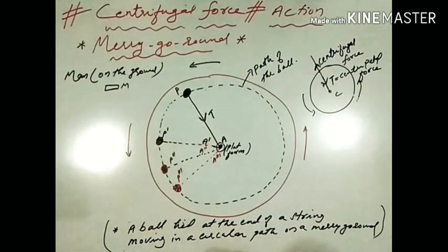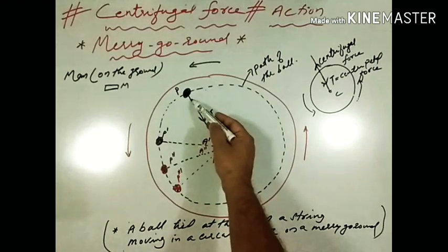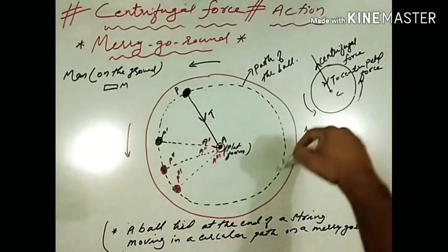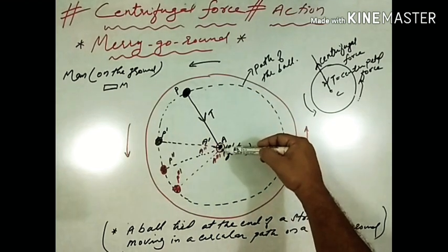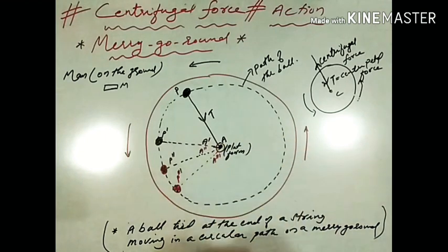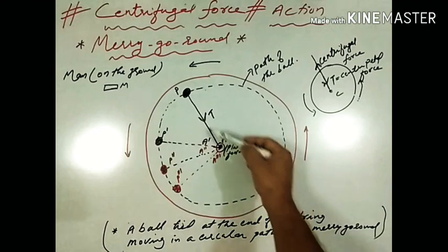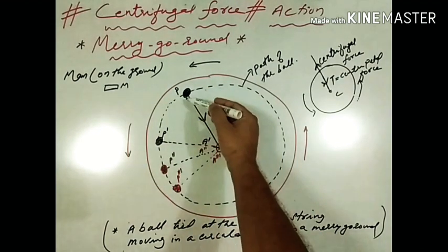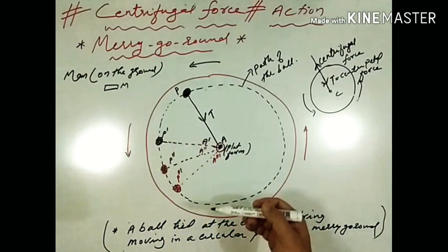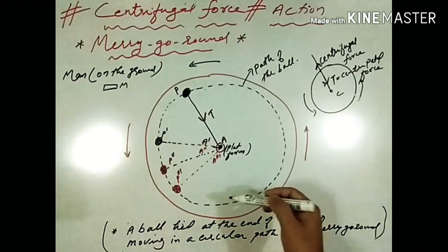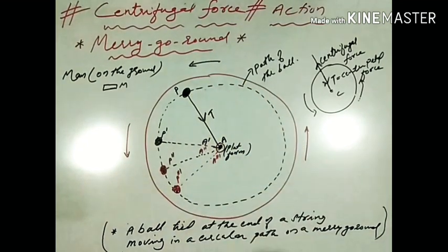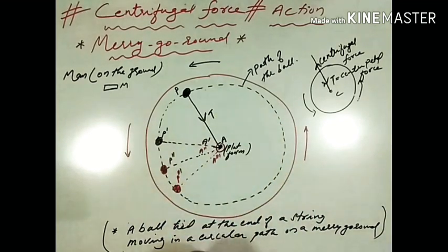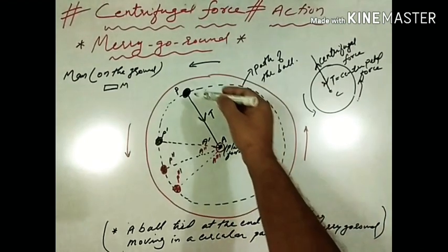Look at the diagram. We can see a ball tied at the end of a string moving in a circular path on a merry-go-round. The ball is tied at one end of a string and the other end is tied at the centre of the merry-go-round at A. Initially, when the platform is stationary, the ball is stationary and the string is loose. As the platform starts rotating, the ball rolls towards the edge and the string becomes tight. The tension is directed towards the centre — this tension is the centripetal force required for producing circular motion.